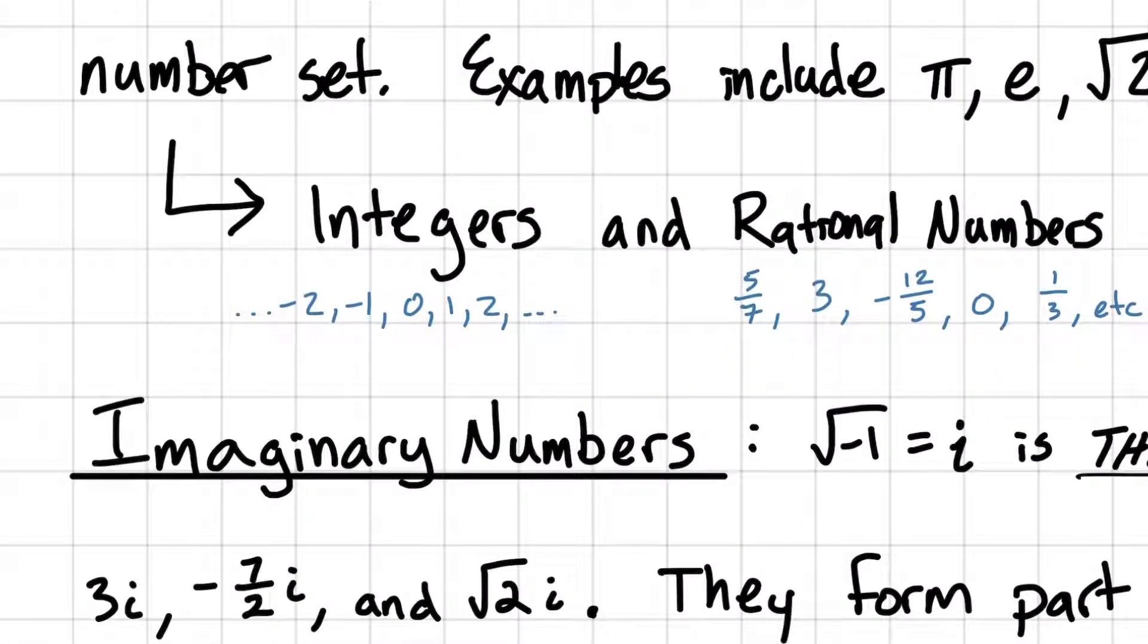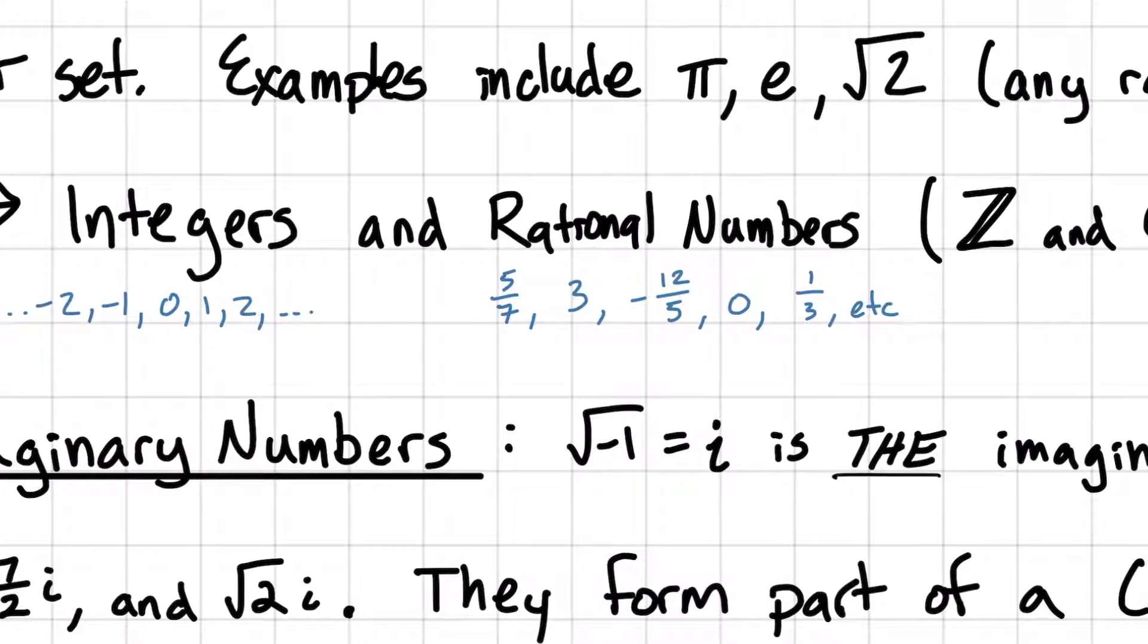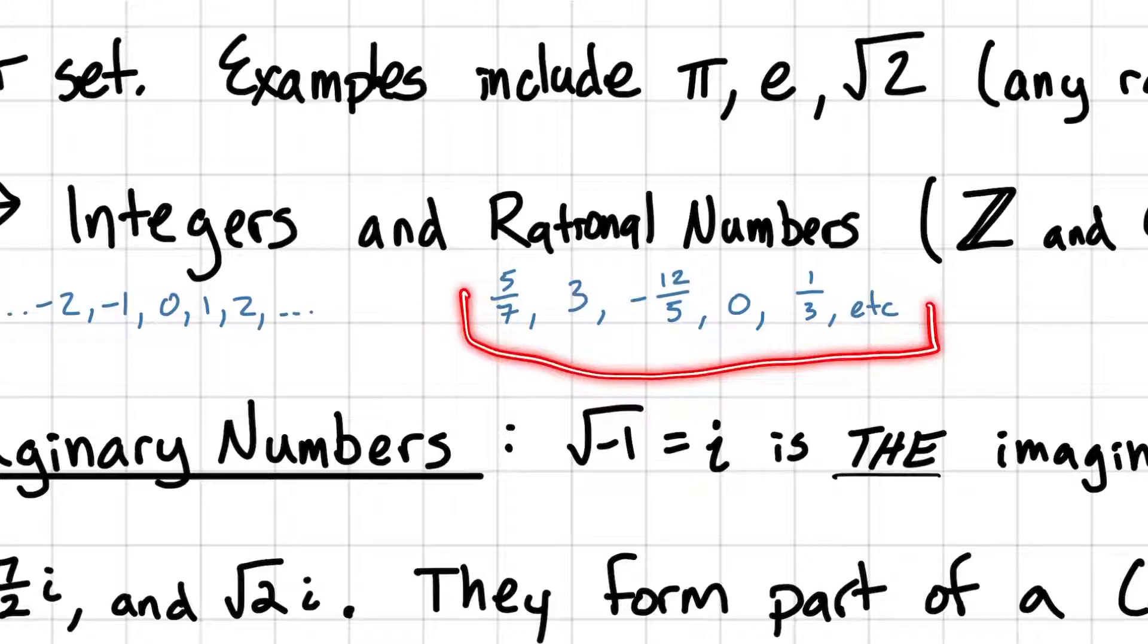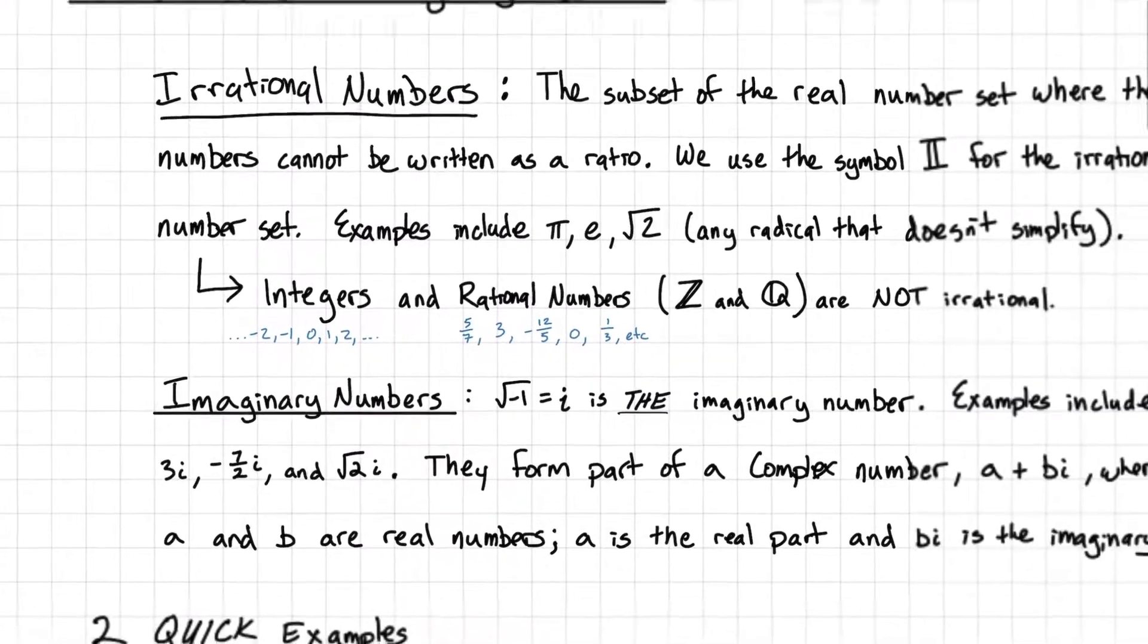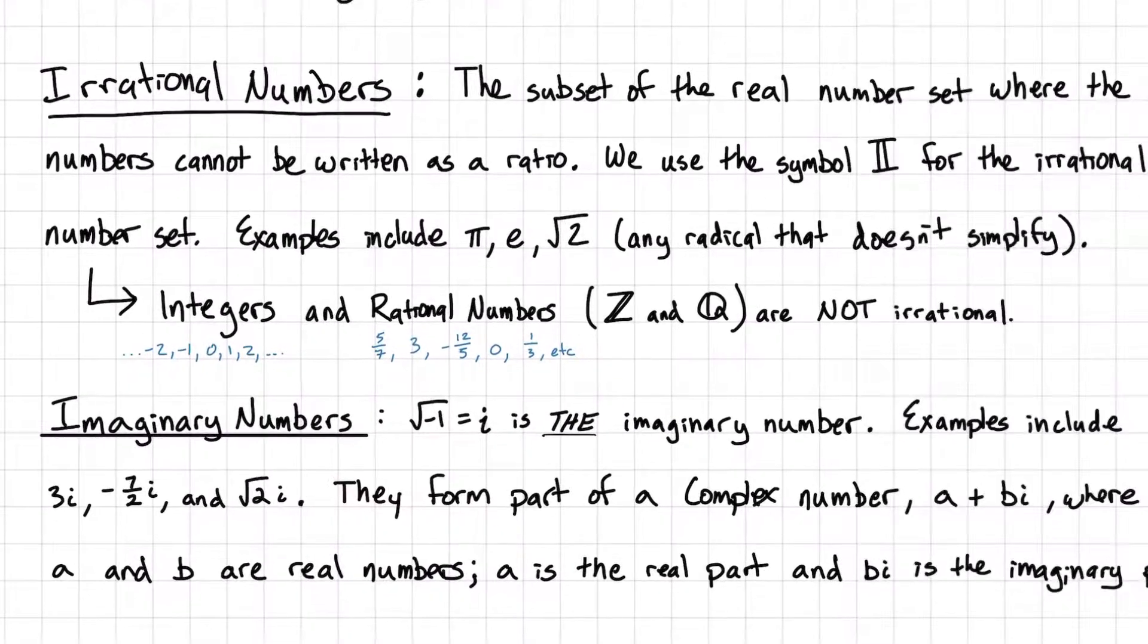So notably, integers, so these numbers negative 2, negative 1, 0, 1, and 2, on and on forever in both directions, they are not irrational numbers. Rational numbers, numbers that can be written as fractions, which also include integers, those are not irrational. And shortcuts for those are this double bar Z and the double bar Q are the shortcuts for those number sets. So irrational numbers are all those numbers that cannot be written as a fraction. And notably, today, we'll be looking at our square roots that don't simplify.